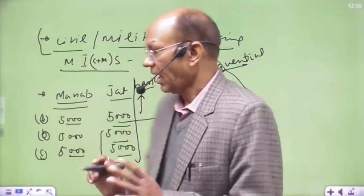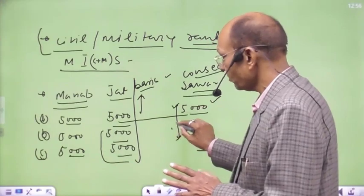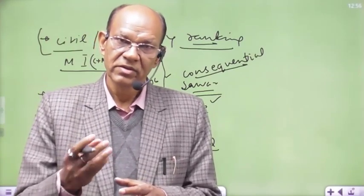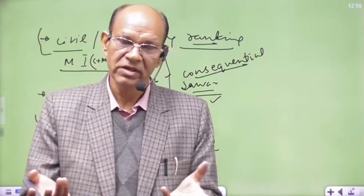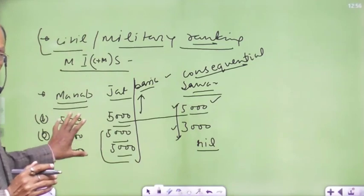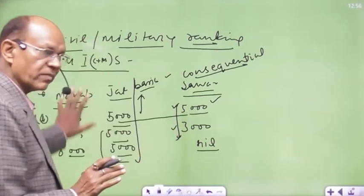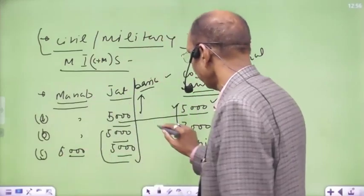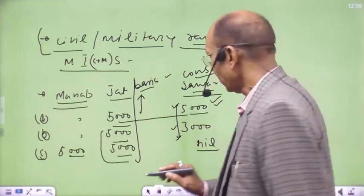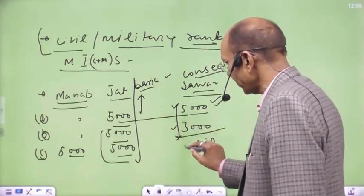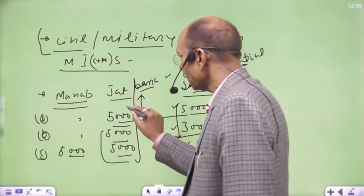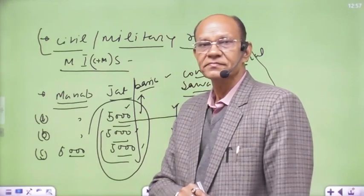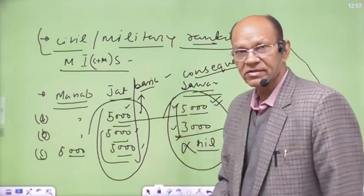Consequential rank means first this will be given and then later this will be given. In official ranking, everyone may be at the same level and their Jat rank is also the same, but when the Sawar rank comes into consideration, there was a difference. Sawar rank means this person has to maintain 5,000 troops, this one 3,000, and this one no troops at all. The basic salary is equal for all three, and their additional salary for the Sawar rank is different.